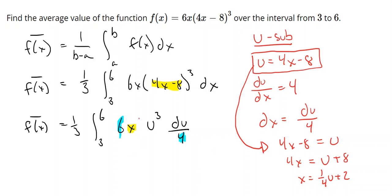And so we're going to have to substitute that in for x. So the 6 and the 4 can come out. That reduces to 3 halves times 1 third gives me 1 half. So we're going to have f of x bar is equal to 1 half, the integral from 3 to 6. We're now going to replace x with 1 fourth u plus 2 times u cubed du.